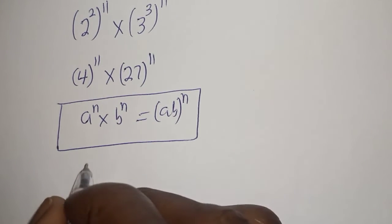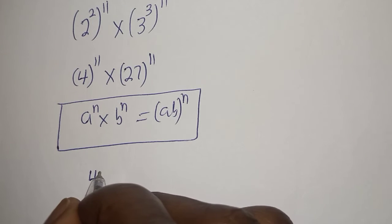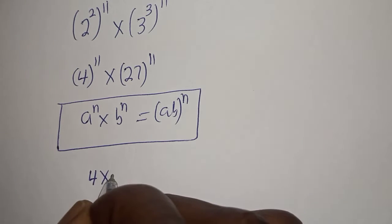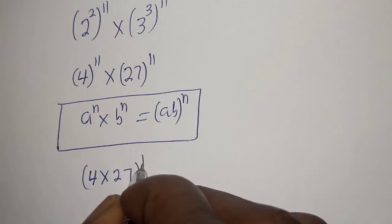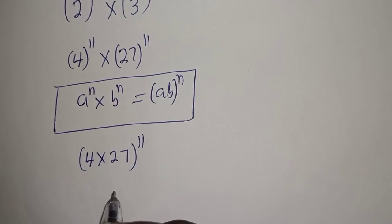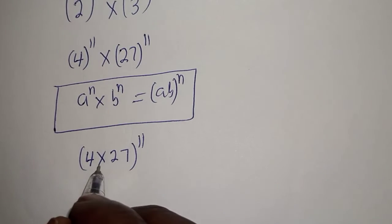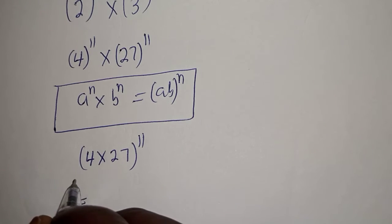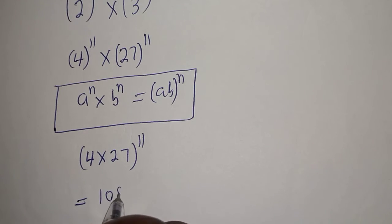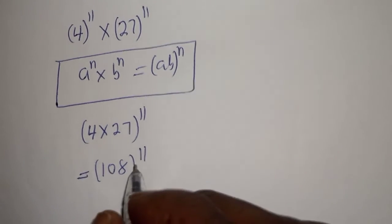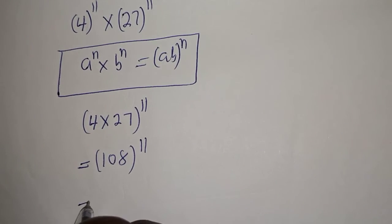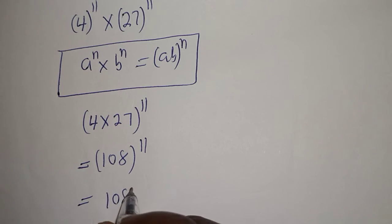Then we have 4 multiplied by 27, raised to power of 11. 4 times 27 is equal to 108, so this is 108 to the power of 11. Therefore, our final answer is 108 raised to power 11.